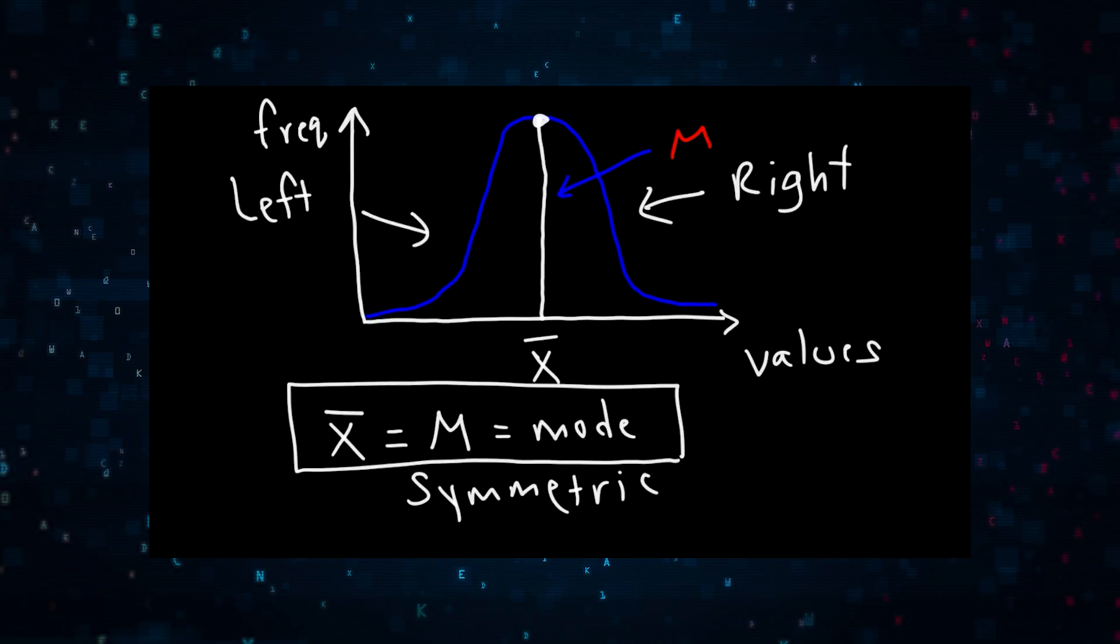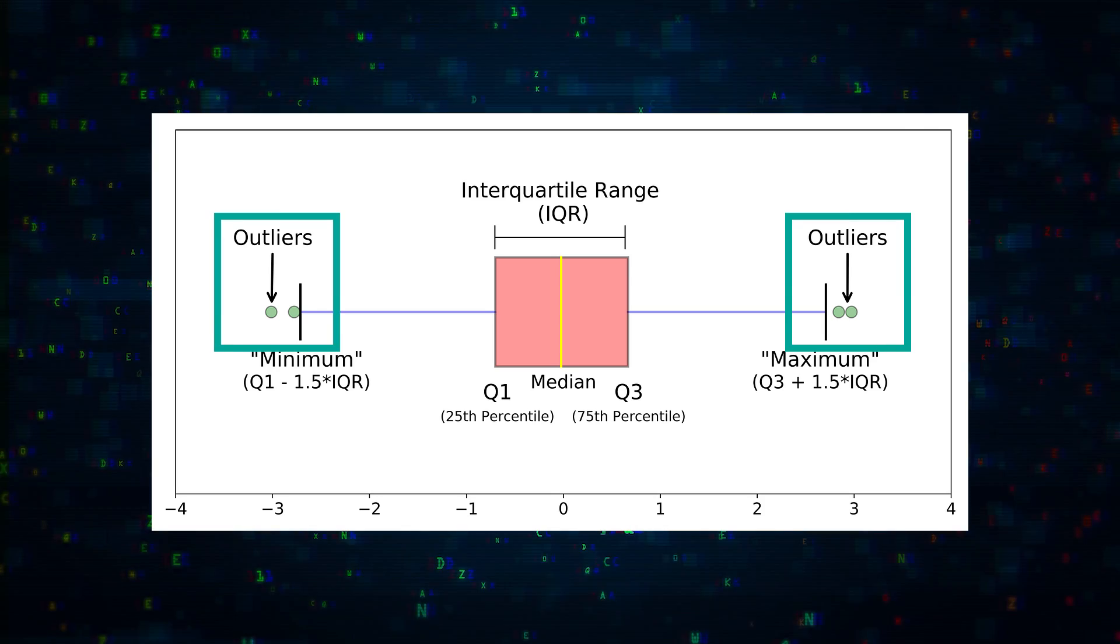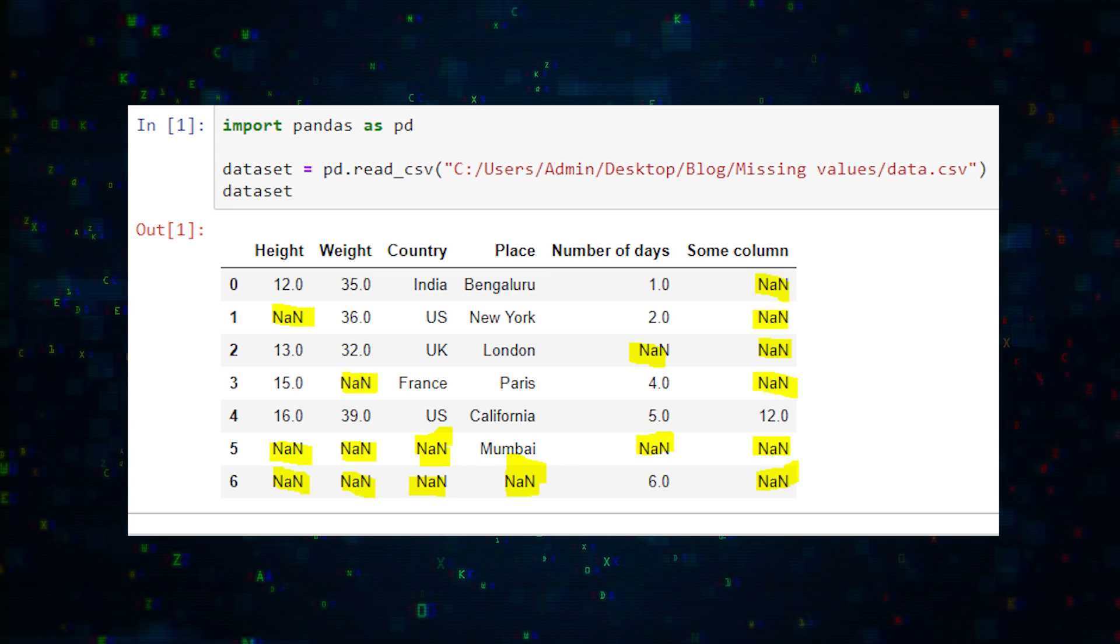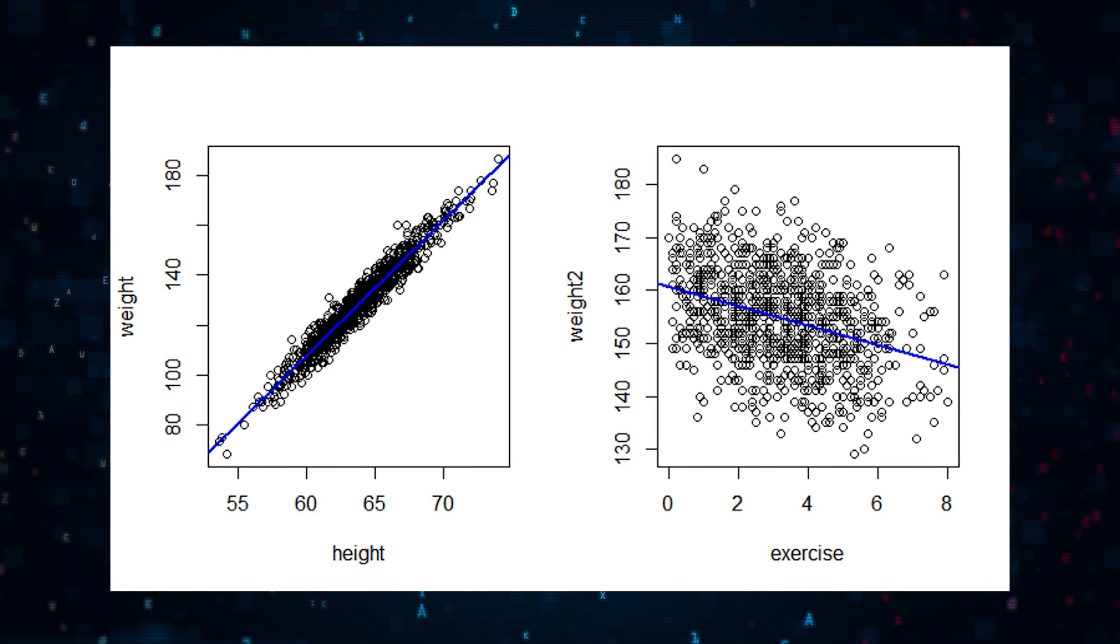Understanding how your data is distributed can help you decide what statistical methods you can use. You should also be looking out for outliers, missing values, and correlations in your data. What are the relationships between different variables and columns? Do they move together? Do they move independently?